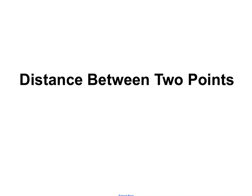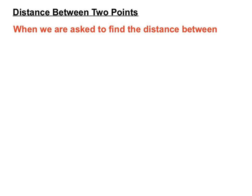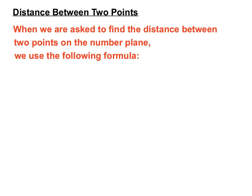This video explores how to find the distance between two points on the number plane. When we're asked to find the distance between two points on the number plane, we use the following formula: distance equals the square root of x2 minus x1 squared plus y2 minus y1 squared.